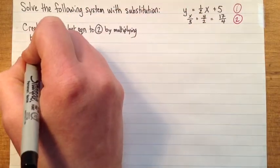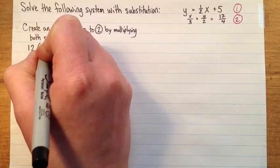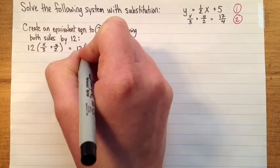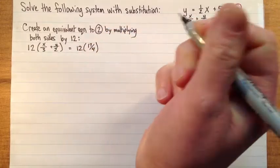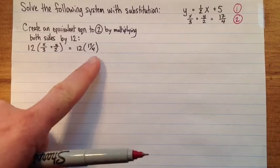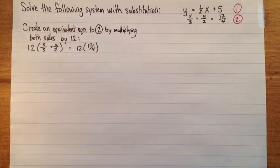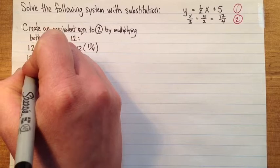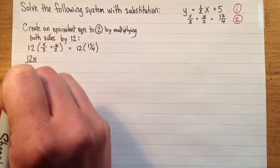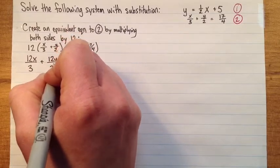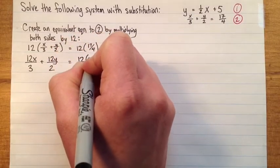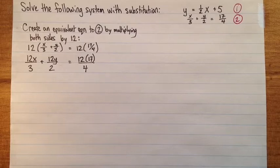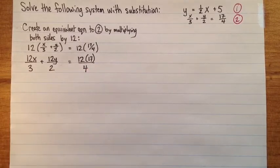So what I get is I have twelve times x over three plus y over two equals twelve times seventeen over four. So I'm totally allowed to do this because I'm multiplying both sides. If these were equal before, if I multiply them by twelve, they're still going to be equal. And now, I'm going to distribute this. So I have 12x over 3 plus 12y over 2 equals 12 times 17 over 4.